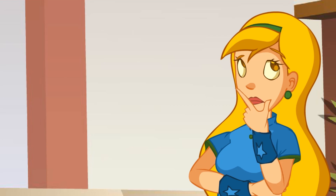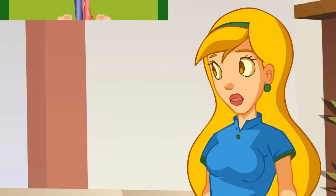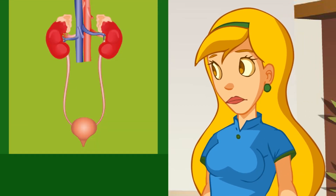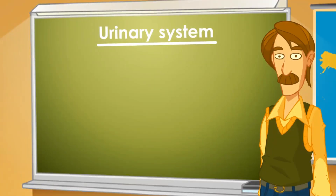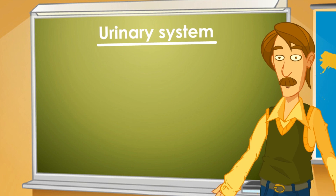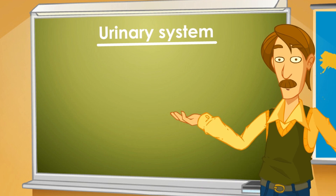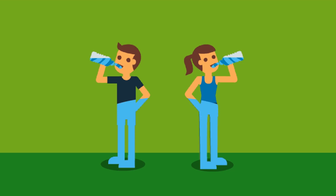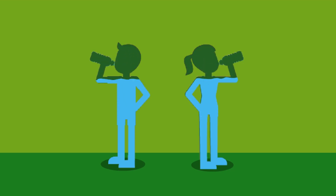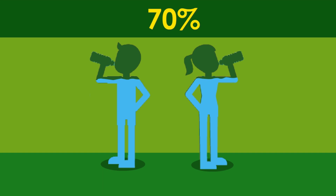I think we should revise what we've seen in class about the urinary system. If we had to mention the proportion of water in our body, what would you say? I read that it's about 70% of our body weight.